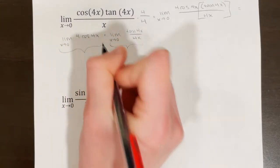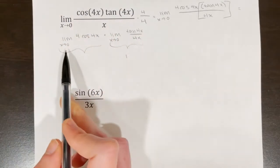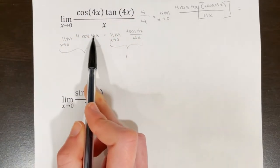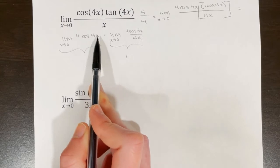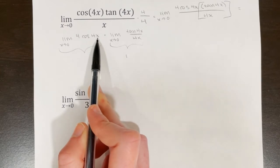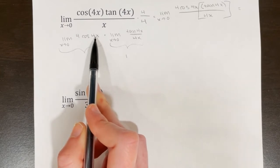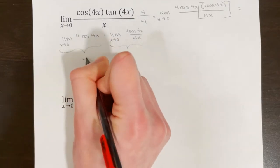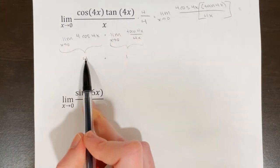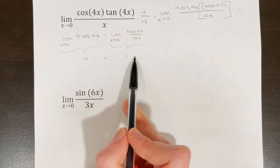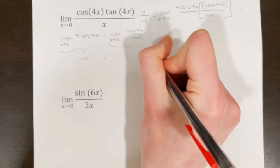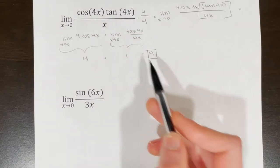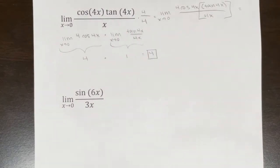And then I need to evaluate the cosine limit through direct substitution. Cosine of 4 times 0 is cosine of 0, which equals 1. So 4 times 1 is 4. I need to evaluate 4 times 1, and that is also 4. So 4 is the limit of this function.